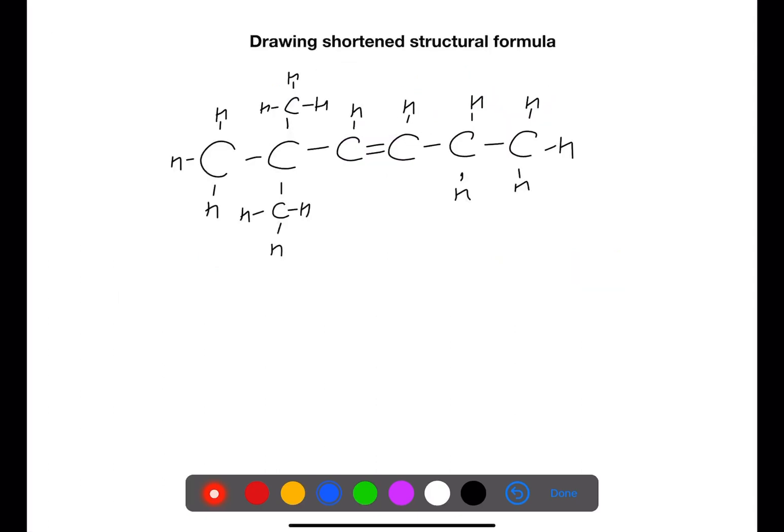Let's look at an example of drawing a shortened structural formula. When we draw a shortened structural formula we are taking out the bonds. The first thing we need to do is to split the molecule up into the different sections based on the main carbon chain.